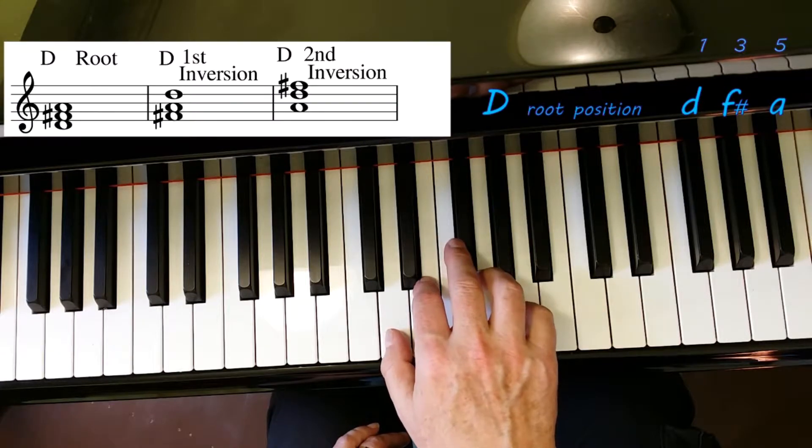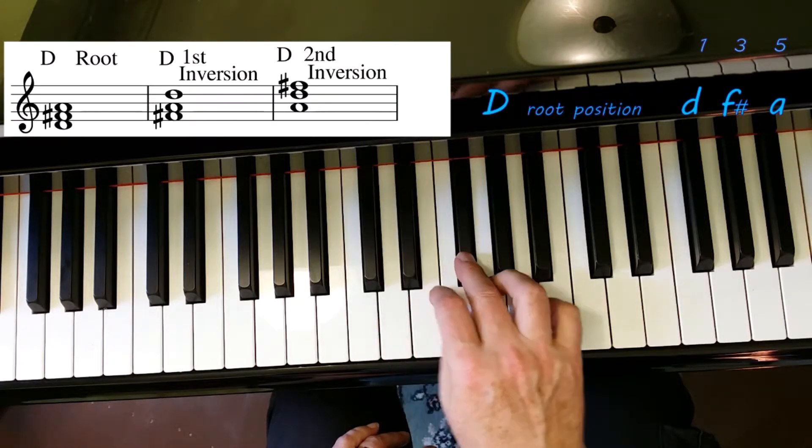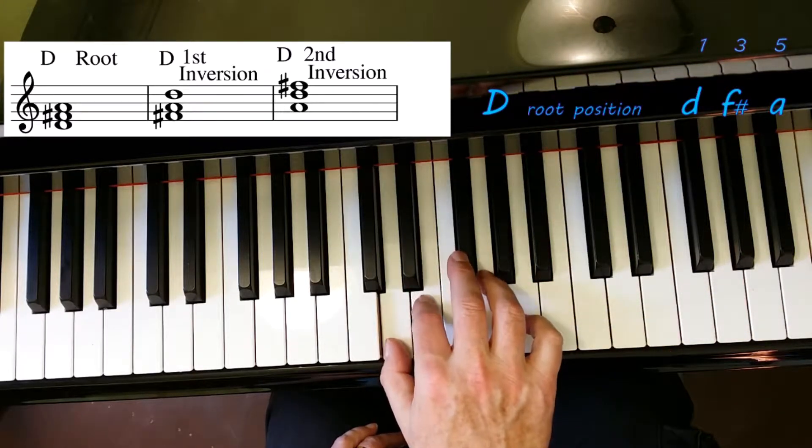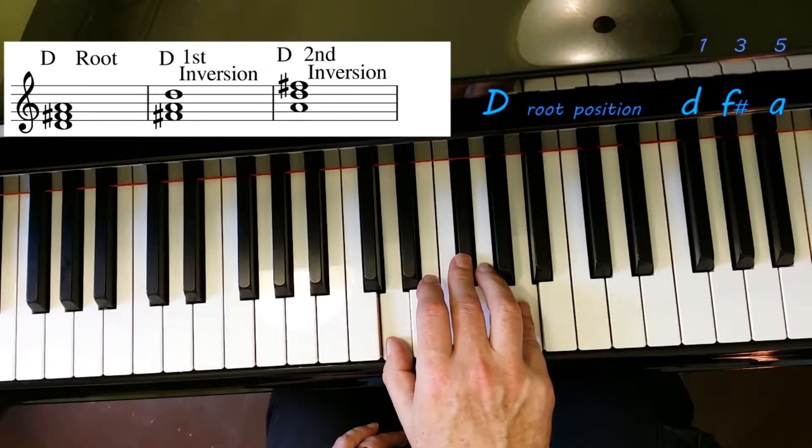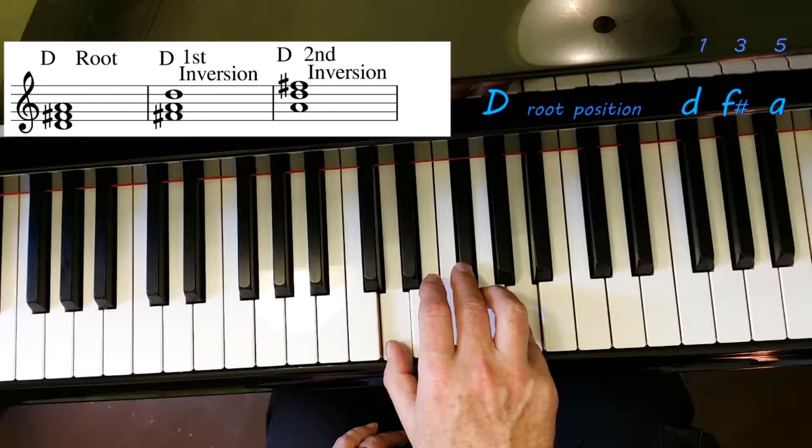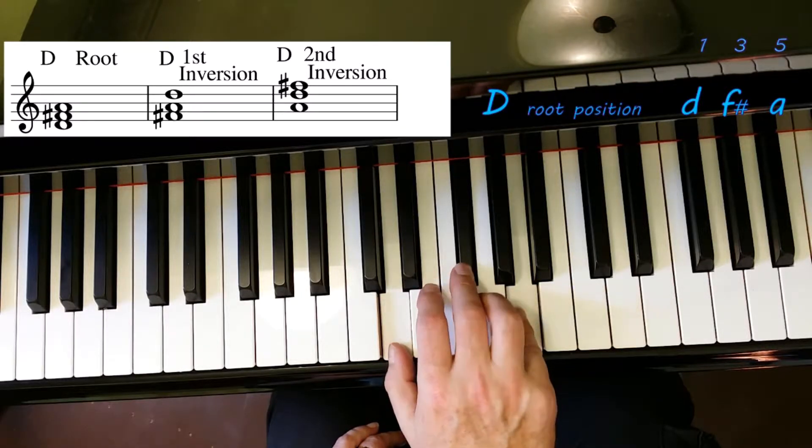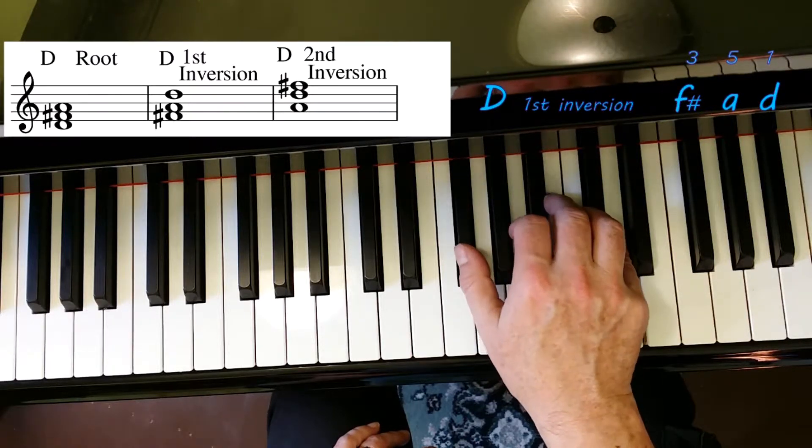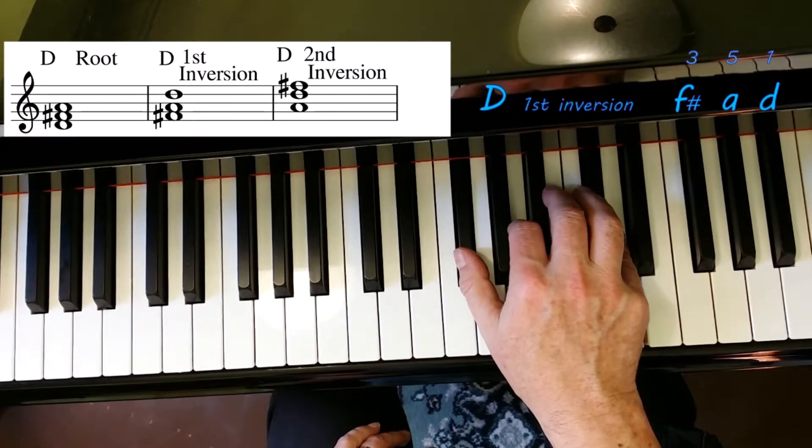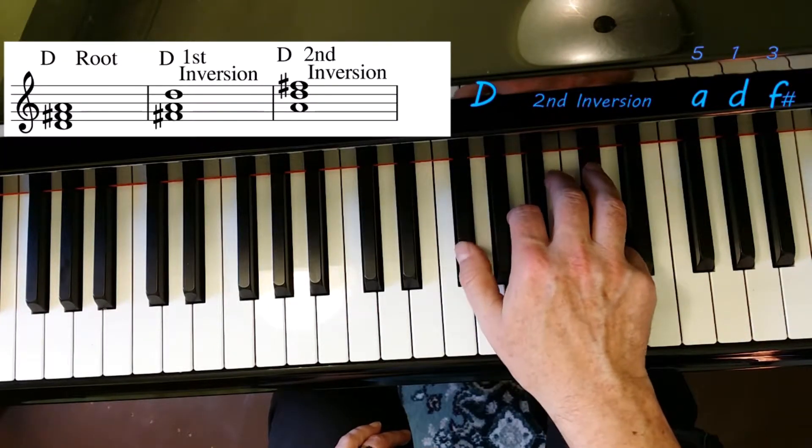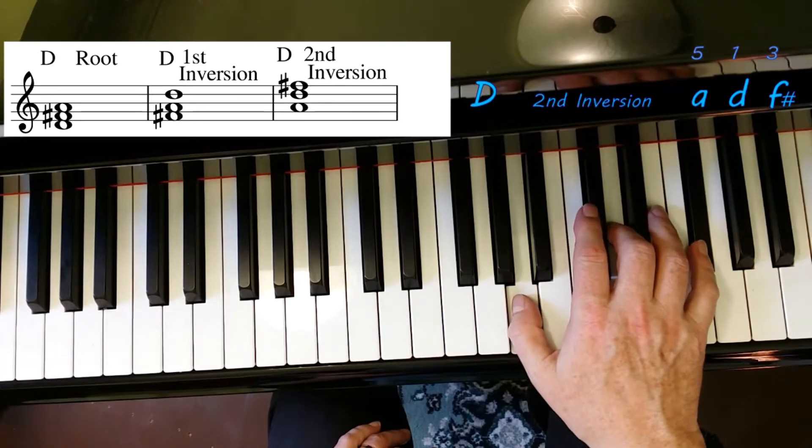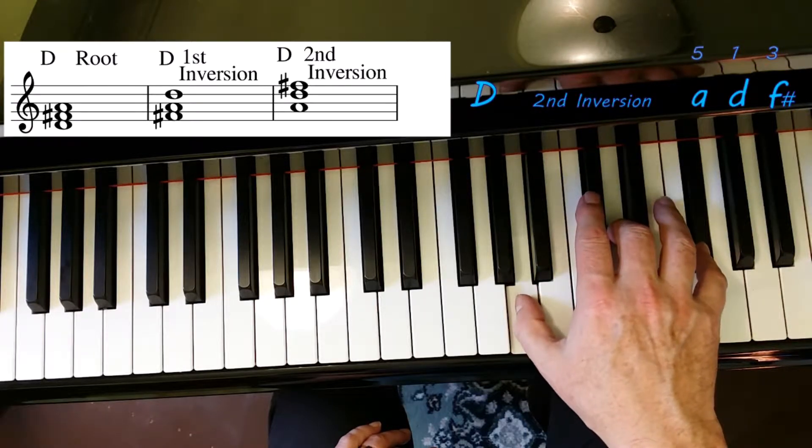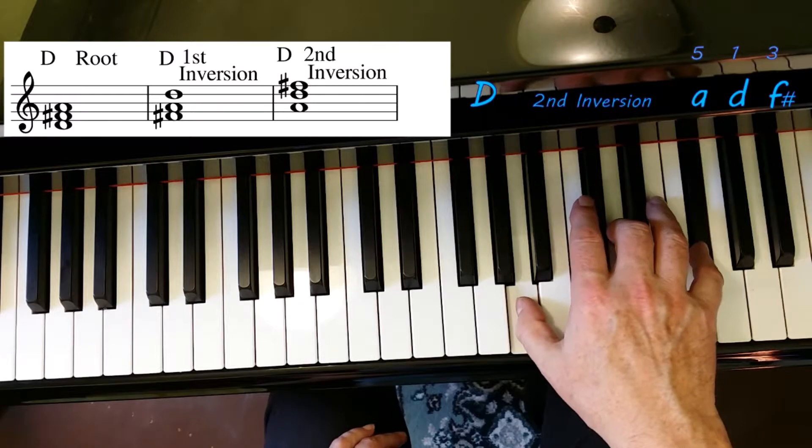D major has two sharps: F sharp and C sharp. The F sharp is going to affect our chord. Three, five. Here we have D major: D, F sharp, and A. Put the D on top and we have first inversion. One, three, five—D, F sharp, A. Put the F sharp up to the top and you have one, three, five, second inversion. D major.